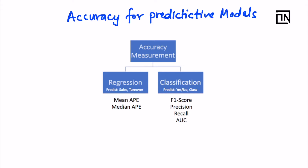The ideal answer for measuring the accuracy of predictive models is different for regression and for classification. For regression, the answer is 100 minus MAPE — the Mean Absolute Percentage Error. Along with the mean, you can also utilize the median for regression, because sometimes there are huge outliers and to nullify their effect you can look at the median.